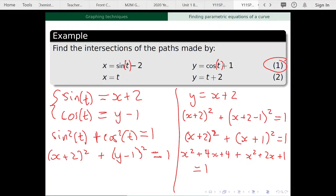So just collecting like terms, I get 2x squared plus 6x plus 5. But I'm also going to take the 1 over from the right hand side. So it's plus 5 minus 1, that's plus 4 equals 0.